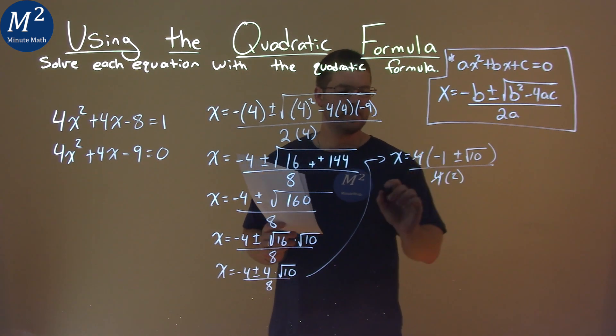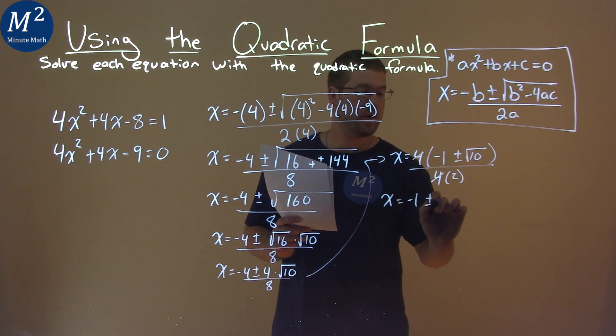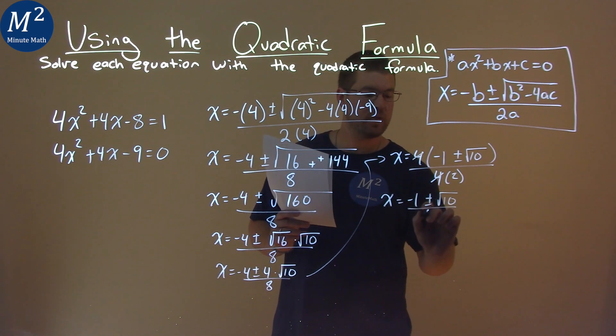The 4s cancel, and we have x equals negative 1 plus or minus the square root of 10, over 2.